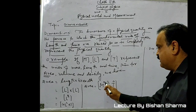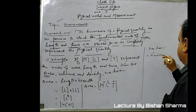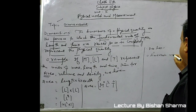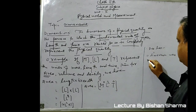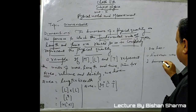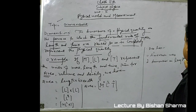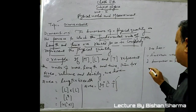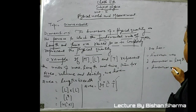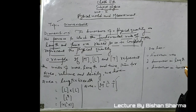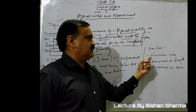Area has zero dimension in mass, 2 dimensions in length, and zero dimension in time. So area has 0 dimension in mass, 2 dimensions in length, and 0 dimension in time.